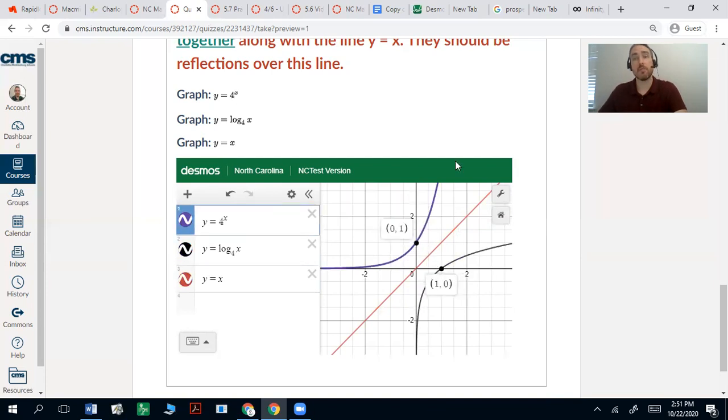Look at the intercepts. This one has an intercept of one for the y. This one has an intercept of one for the x. They switch.